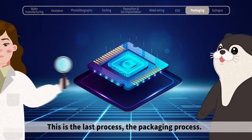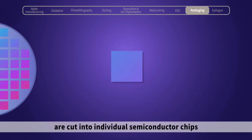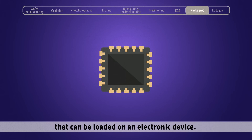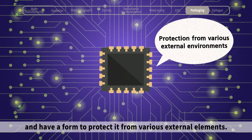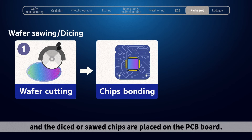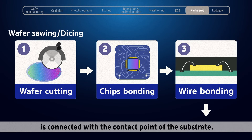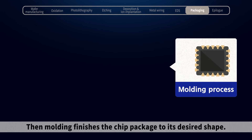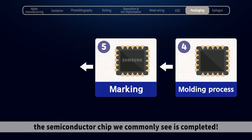This is the last process — the packaging process. The wafer completed through the previous steps is cut into individual semiconductor chips that can be loaded on an electronic device. An individual chip must have a path to exchange electrical signals with the outside and have a form to protect it from various external elements. The diced or sawed chips are placed on a PCB board. In the bonding step, the contact point of the semiconductor chip is connected with the contact point of the substrate. Then molding finishes the chip package to its desired shape. After sealing the semiconductor and labeling the product name, the semiconductor chip we commonly see is completed.